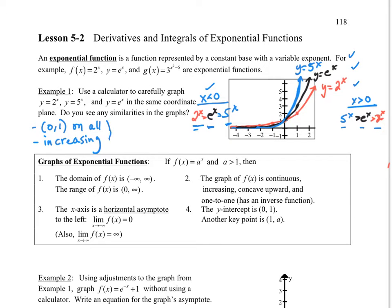Some things to note. Domain is negative infinity to infinity, and the range is 0 to infinity. We never hit 0, but that would be a horizontal asymptote. As x goes to negative infinity, f(x) will go to 0. And as x goes to infinity, f(x) goes to infinity. So that means we have a horizontal asymptote of y = 0.